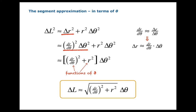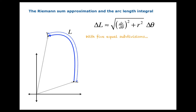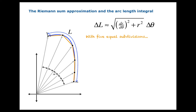The length of a little bit of arc length will be given by that formula. Now we look at a whole curve where delta theta is no longer small. We could divide the theta interval into equal divisions — say five equal divisions — so we have points spread out with equal differences in their theta coordinates. We draw these segments in, and hopefully the sum of these five segment lengths will approximate the length of the curve.